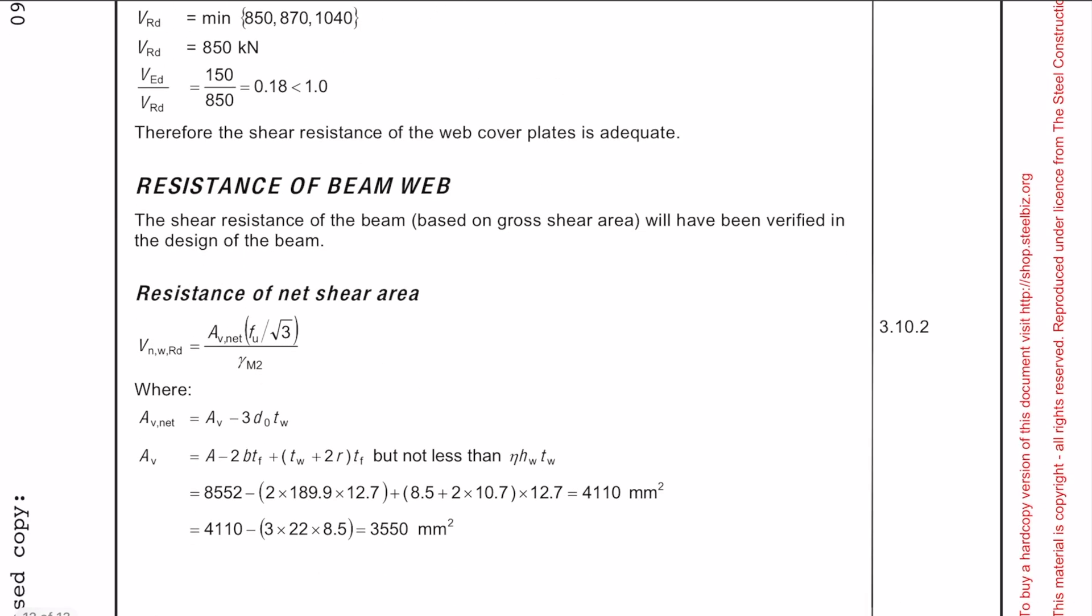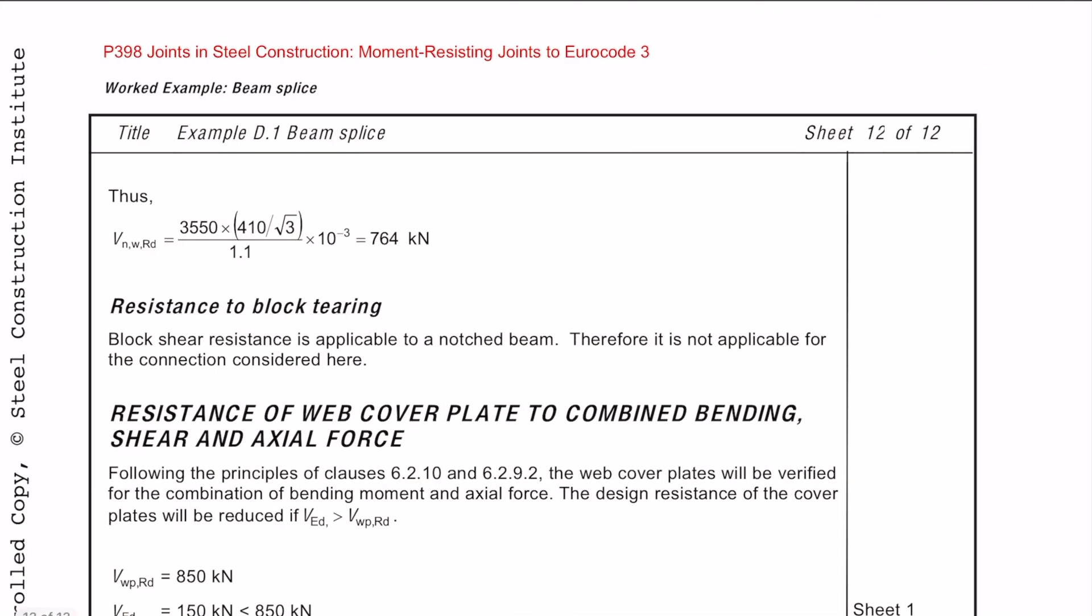Now we need to check the resistance of the beam web itself, not the cover plate. The resistance of the beam web would have been done when you were designing the beam anyway, so we don't need to check it again. What we will need to check is the resistance of the net shear area, so just follow the equation here. Because this beam is not a notched beam, we don't need to check the resistance to block tearing.